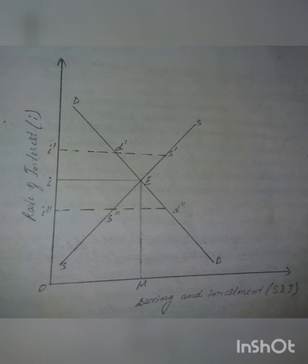In the figure, the DD curve is the demand curve and the SS curve is the supply curve. Both of them intersect at point E, so the equilibrium rate of interest is OI, whereas OM is the quantity of capital demanded and supplied at this rate. At the point of equilibrium E, the rate of interest OI equals savings equals OM. Any deviation from this equilibrium rate of interest will be unstable — the deviation is just temporary and the market will move back to equilibrium point E.